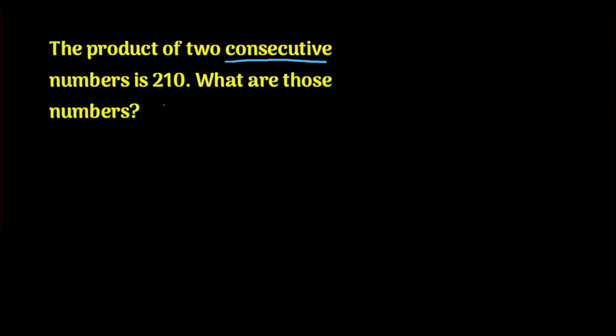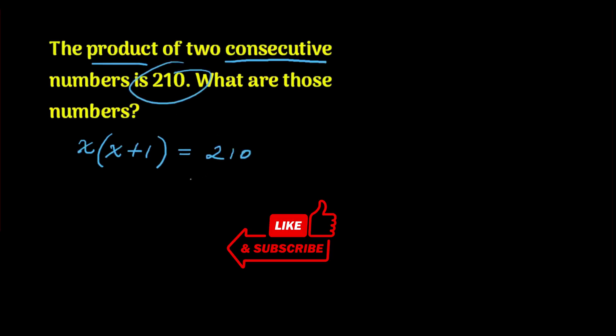Now, you have to break this down. So let's break this down together. Consecutive means start with x, and the one after that is x plus 1. That's what consecutive means, one after the other. And it says product, right? So let's do x bracket x plus 1, and that equals to the product of 210. And you have a beautiful equation, x bracket x plus 1 equals 210.